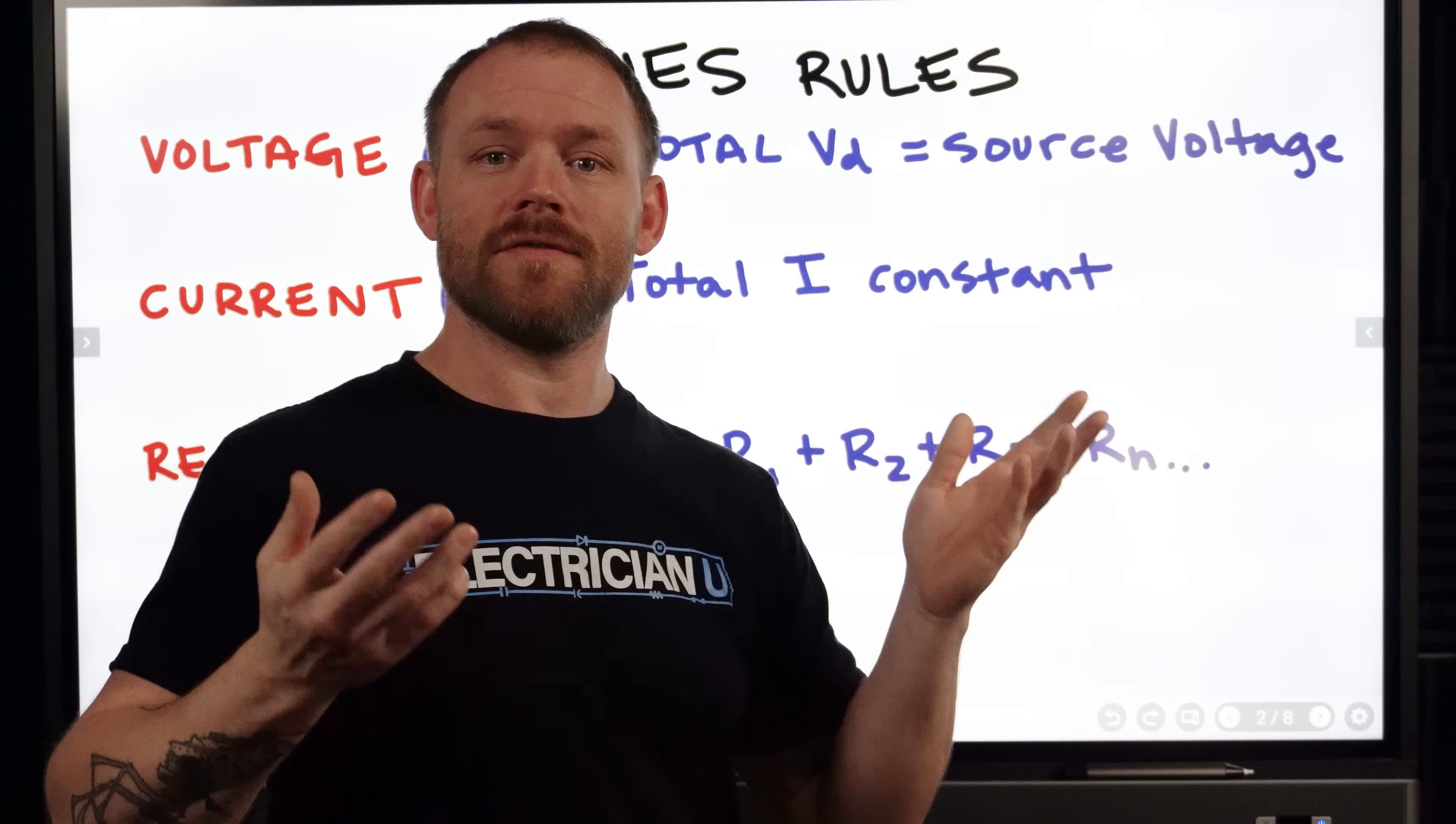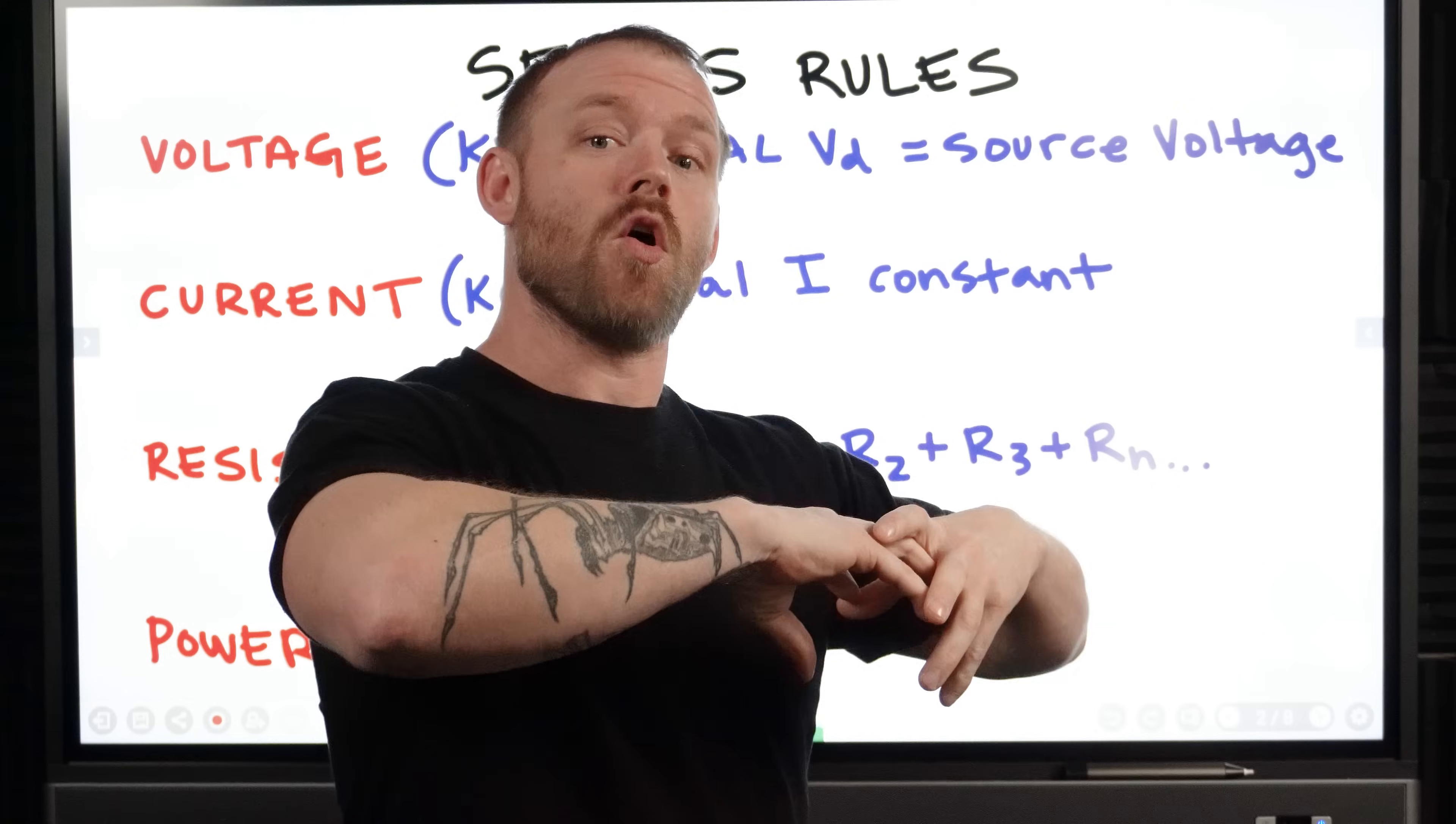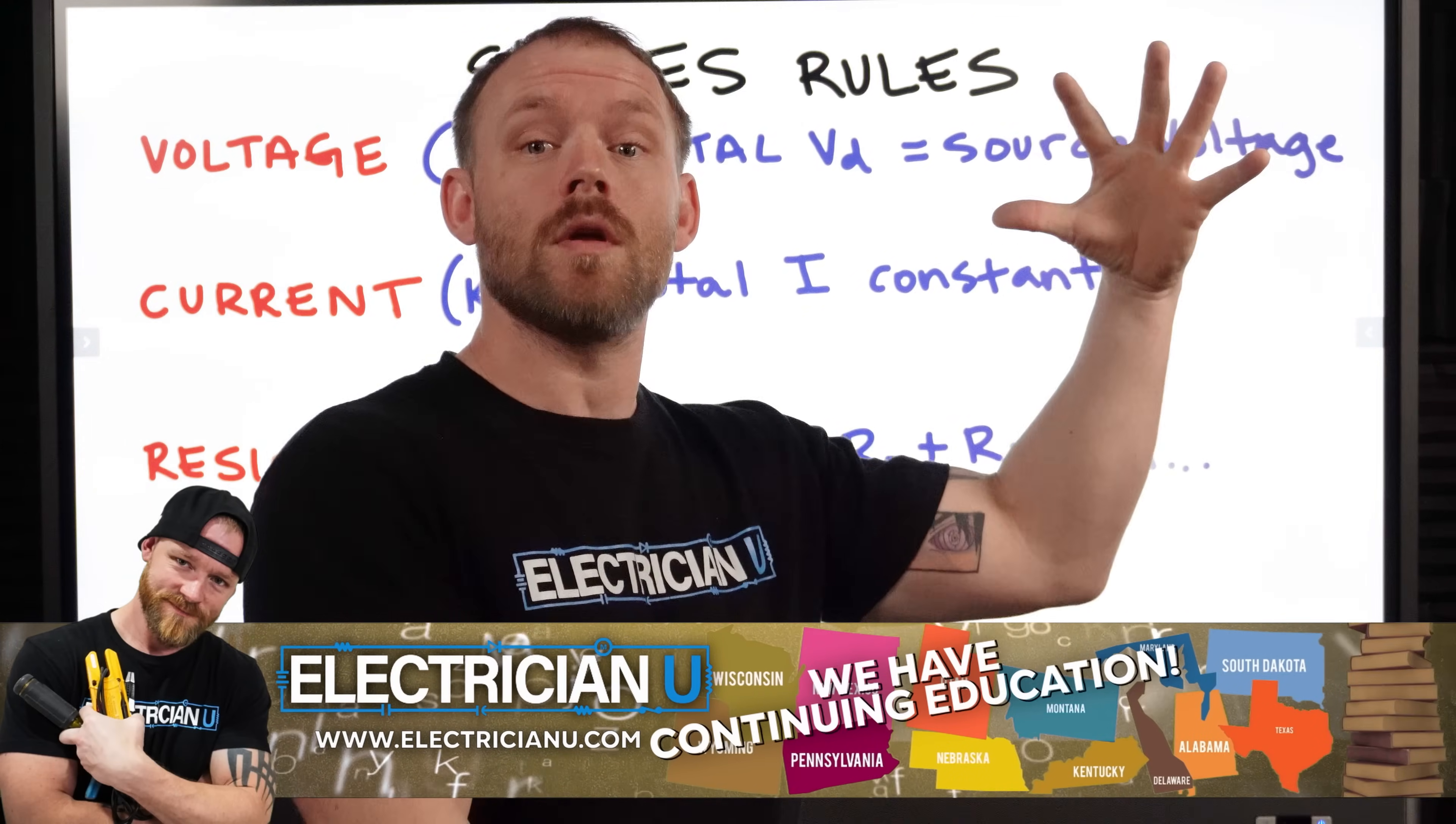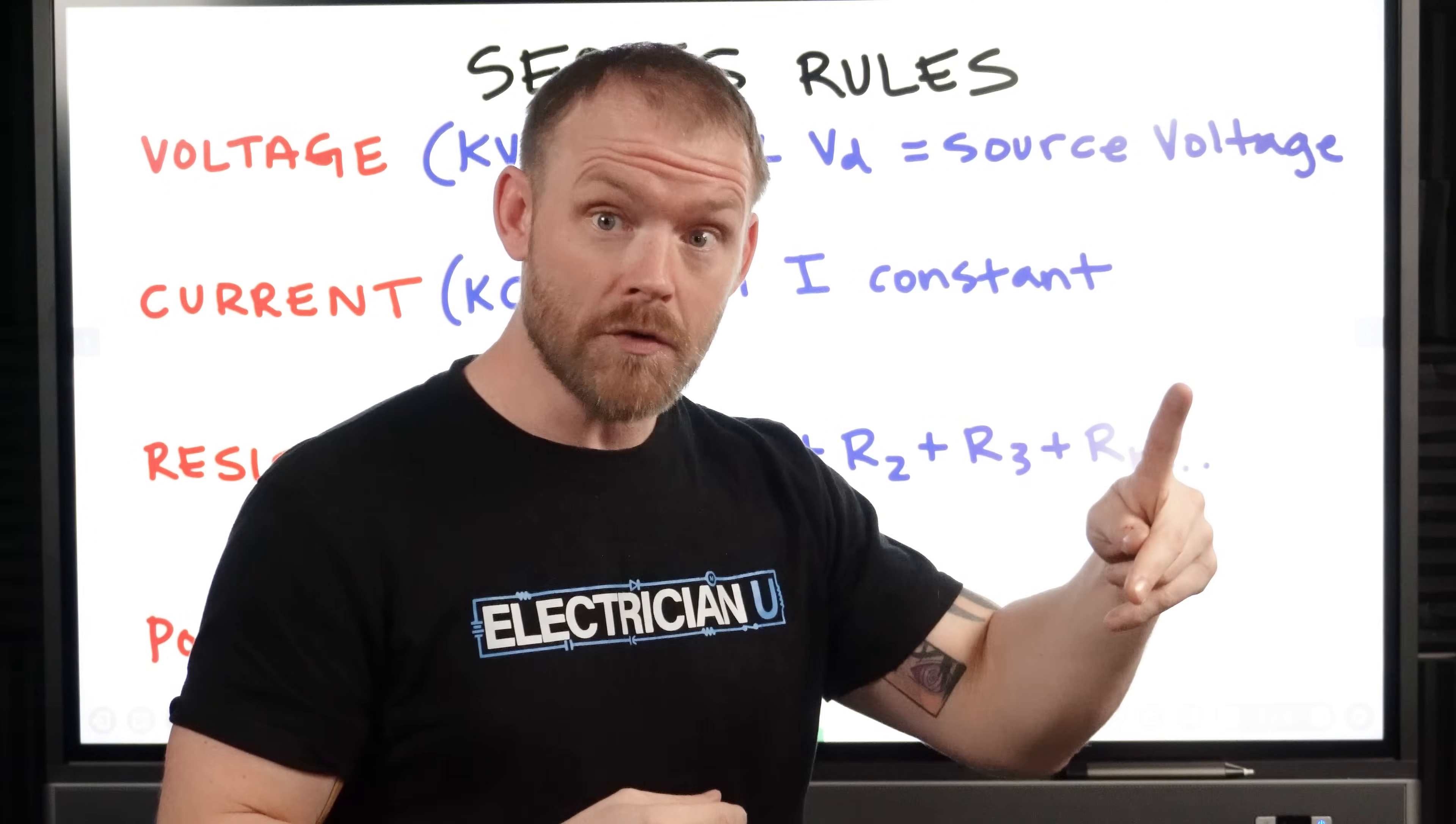So we have a thing called Kirchhoff's voltage law and what he had discovered was that in a series circuit, voltage actually drops across each resistance and it drops across each resistance in a fashion so that all of the voltage that is dropped over all resistances equals the source voltage. If you got 120 volts and you got some resistance, a little bit of voltage is going to drop across each one, but the total amount of that voltage drop is always going to equal your source voltage.